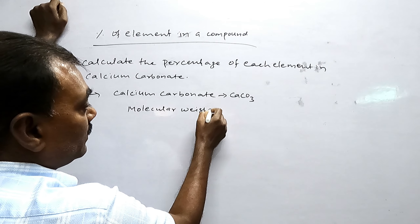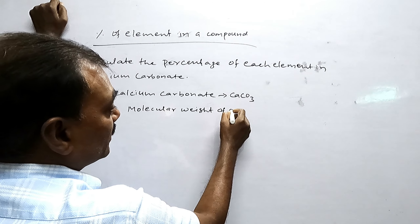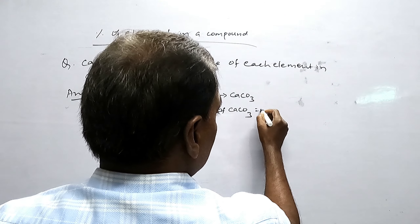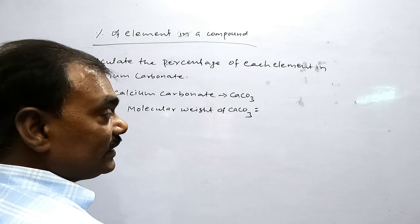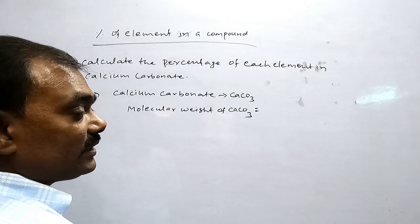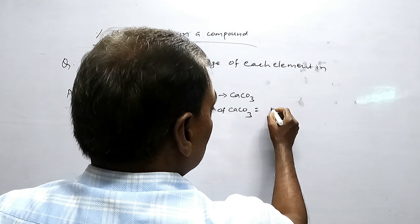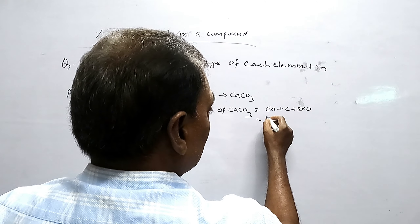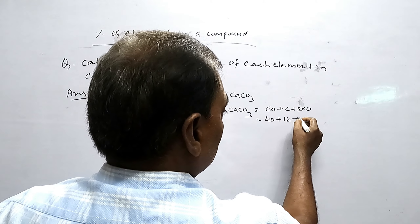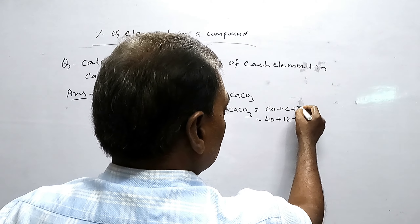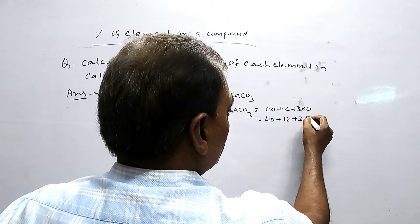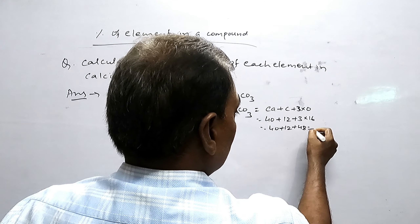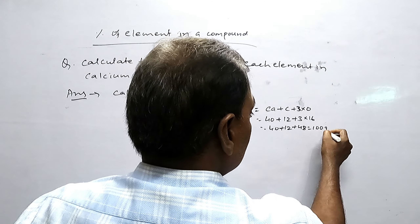Let's take calcium carbonate, CaCO3. To calculate the molecular mass, we add all elements' atomic weights. Ca plus C plus 3 oxygen atoms: Ca is 40, Carbon is 12, Oxygen is 3 into 16 = 48. So 40 plus 12 plus 48 equals 100 grams.